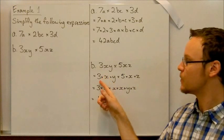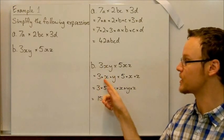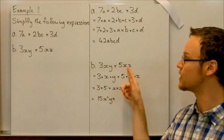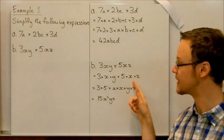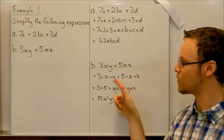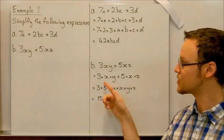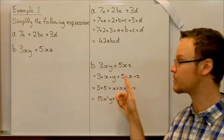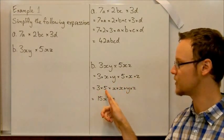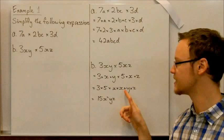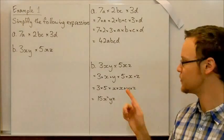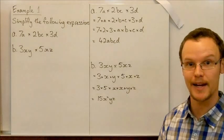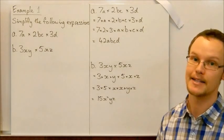A second example, we can expand it out to 3 times x times y times 5 times x times z. Once again rearrange them. This time, not only have we put the numbers together, but we've also got two x's, so we put them next to each other. 3 times 5 times x times x times y times z. Now, if you recall, writing x times x, we can simplify that as x squared.